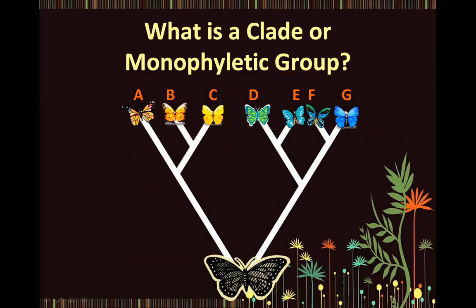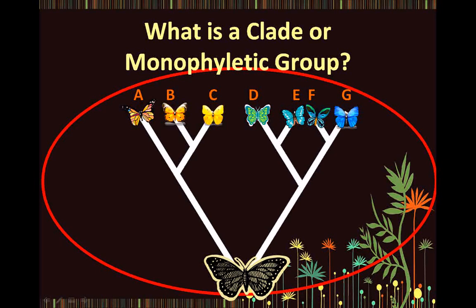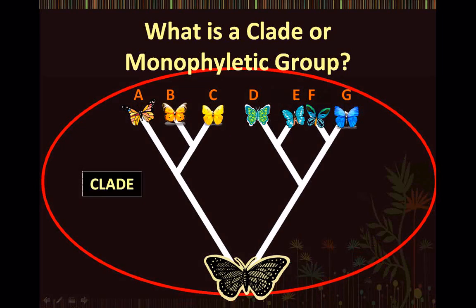If we look at this cladogram, the entire cladogram can be considered a clade because it includes all the descendants of a common ancestor. In this case, it would include all the descendant butterflies from a common ancestral butterfly, which is represented by the node.